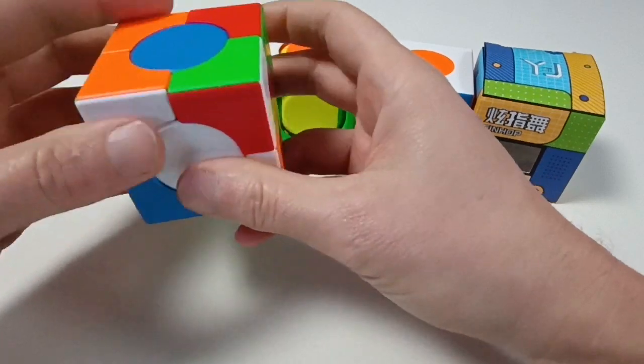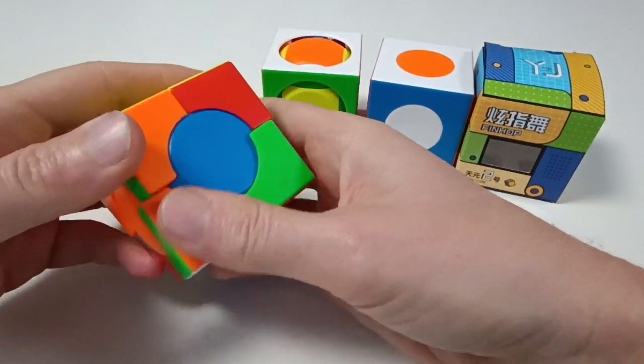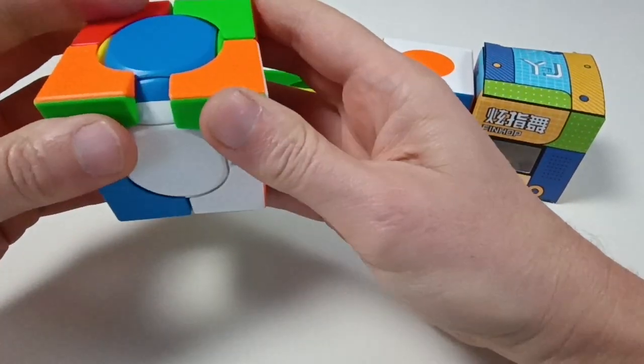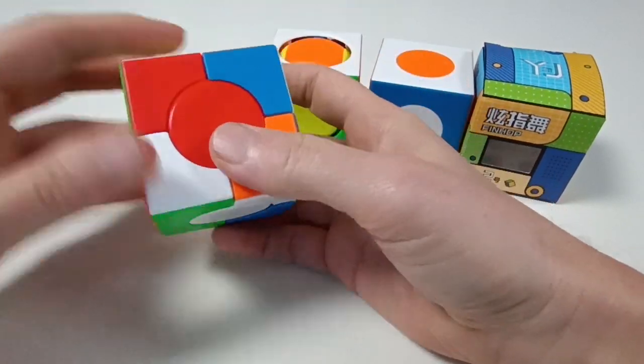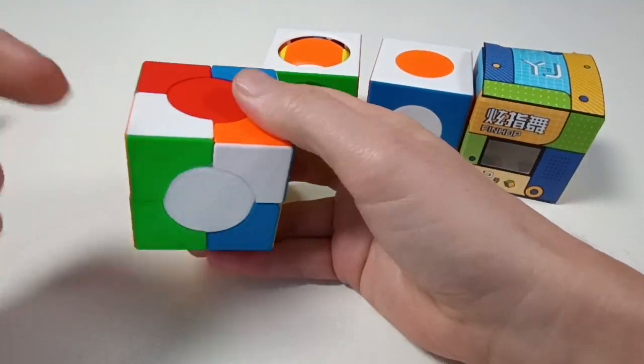Wrong, where is it? Here it is, here it is, correct and correct. So next step is the white layer.